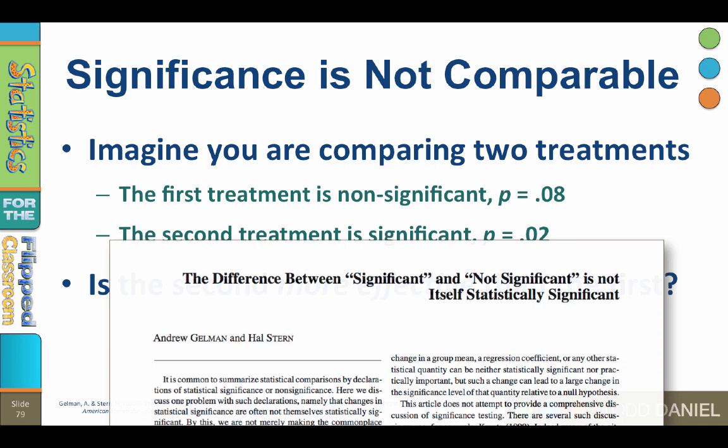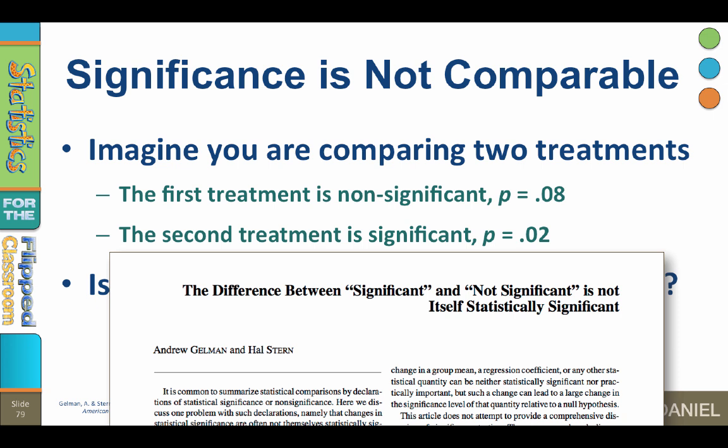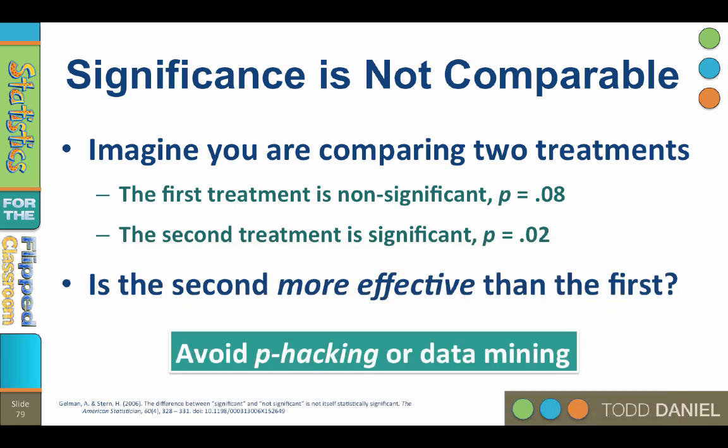The difference between significant and non-significant is not itself statistically significant. We should also avoid something called P-hacking or data mining, where a researcher runs a huge number of statistical tests and then looks for the ones that came out significant. Only those with P less than 0.05 get reported, even though the statistically significant results might not be statistically significantly better than their non-significant brethren.